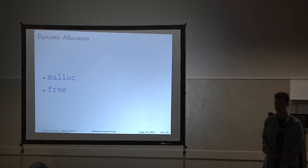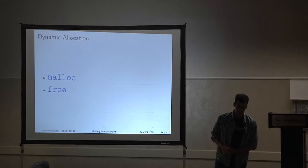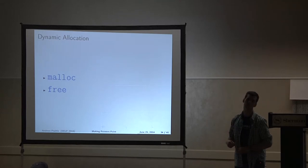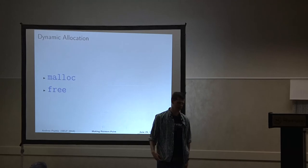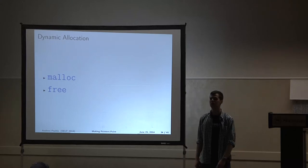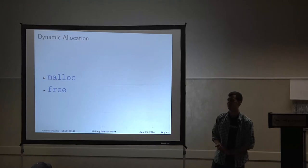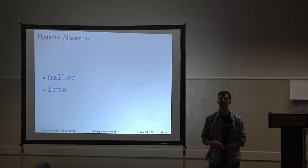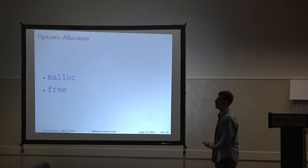Let's get to dynamic allocation — everyone's favorite part of C. There are two functions typically used for this. The two big ones are malloc and free. Malloc, or memory allocate, takes a number of bytes, asks the kernel for a memory space for that many bytes, and then gives you a pointer to that space. Since it can't know what you're going to be using it for beforehand, this will return a void pointer, and you would have to cast it to the actual type you need. Free frees that memory.